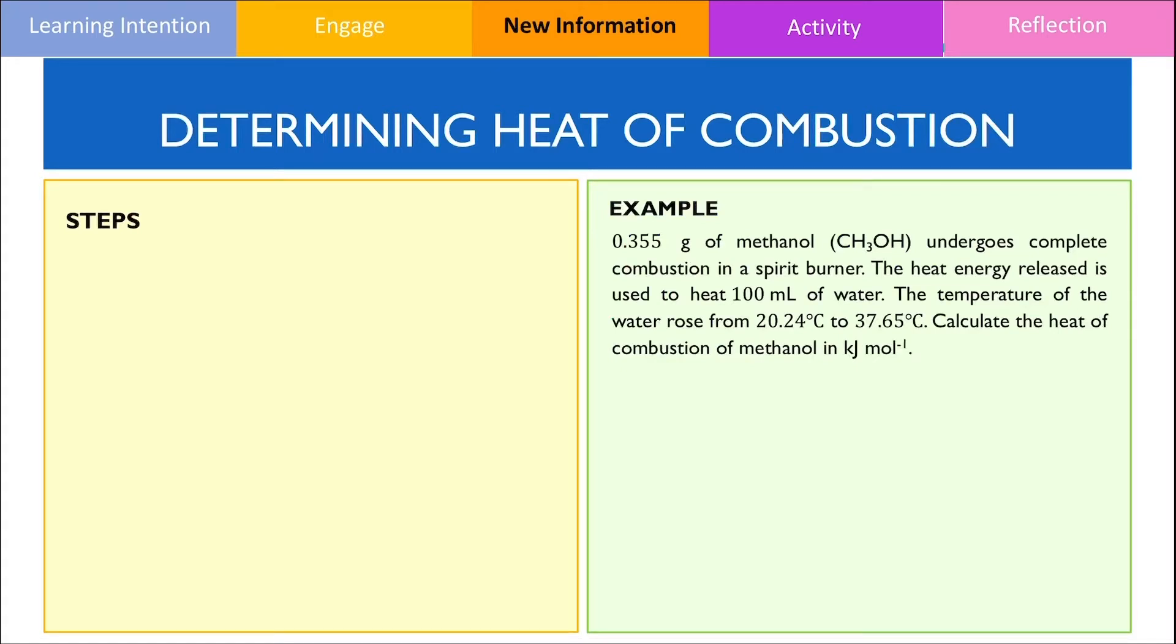The first thing that we should do is try to find out what is the amount of energy used to heat up water. To do this, we will need to first find out what is the change in temperature. Therefore, if we subtract 37.65 with 20.24, this will give us an answer equal to 17.41 degrees Celsius.